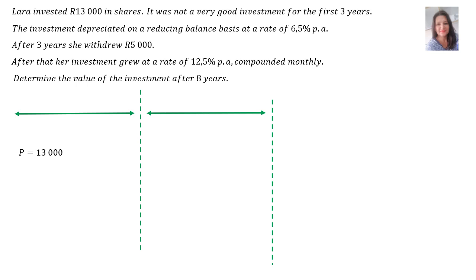It wasn't a very good investment for the first three years. Your time is three years. The investment depreciated on a reducing balance basis at a rate of 6.5% per annum. Therefore, your rate is 6.5%.